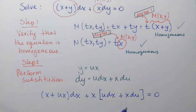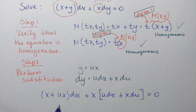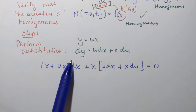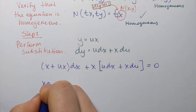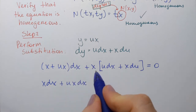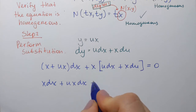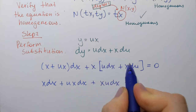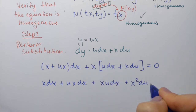Now once we perform the substitution, we obtain a separable equation. But to separate the variables — which are now x and u — we first have to carefully perform some algebraic manipulations: clearing all brackets and parentheses. Starting by distributing dx, we get x dx + ux dx. Then distributing x gives xu dx + x² du equals zero.